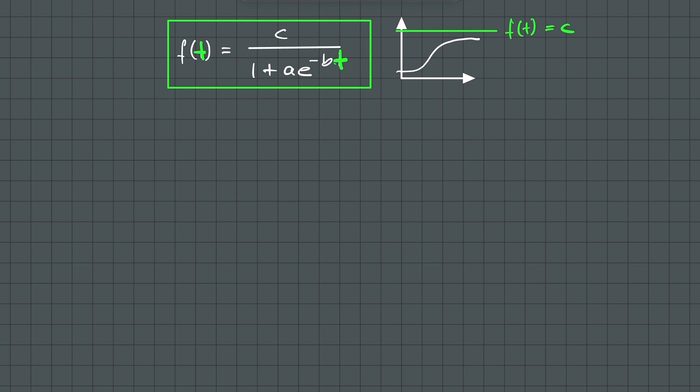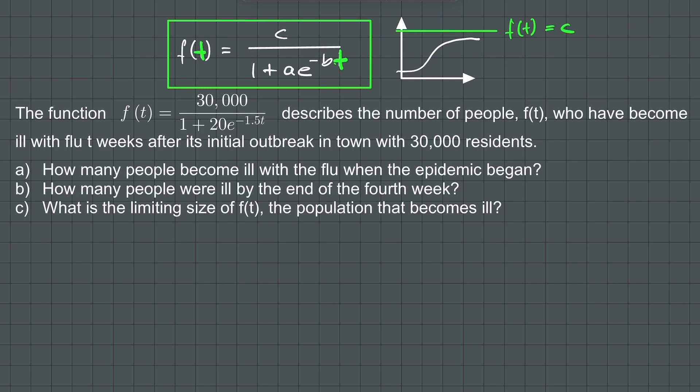Let's make an example to make these things clear. The function f(t) equals 30,000 over 1 plus 20 times e raised to the power of negative 1.5 times t describes the number of people f(t) who have become ill with flu t weeks after its initial outbreak in town with 30,000 residents.